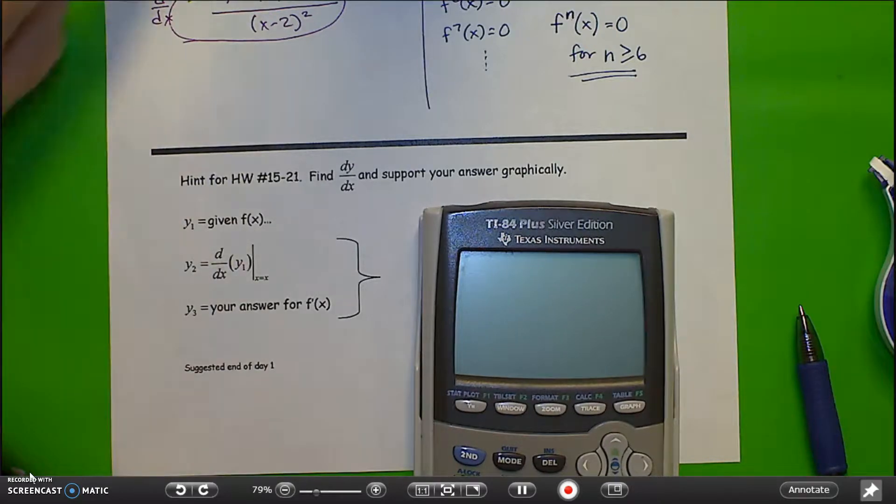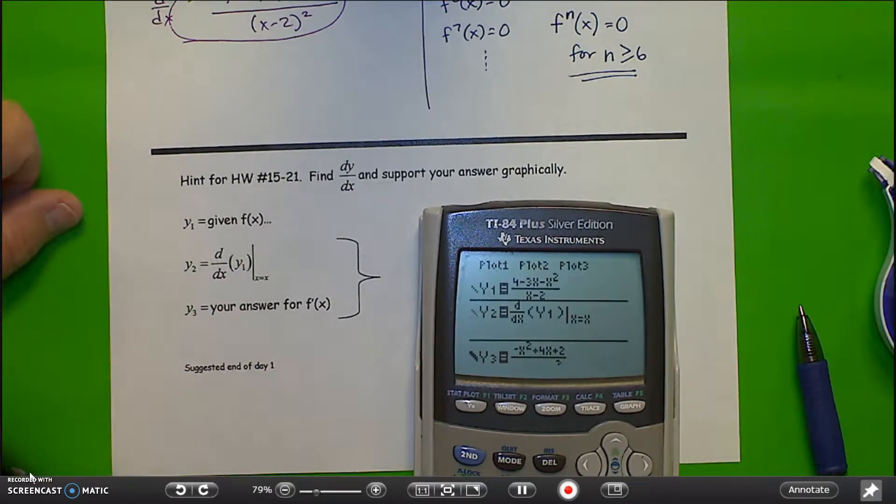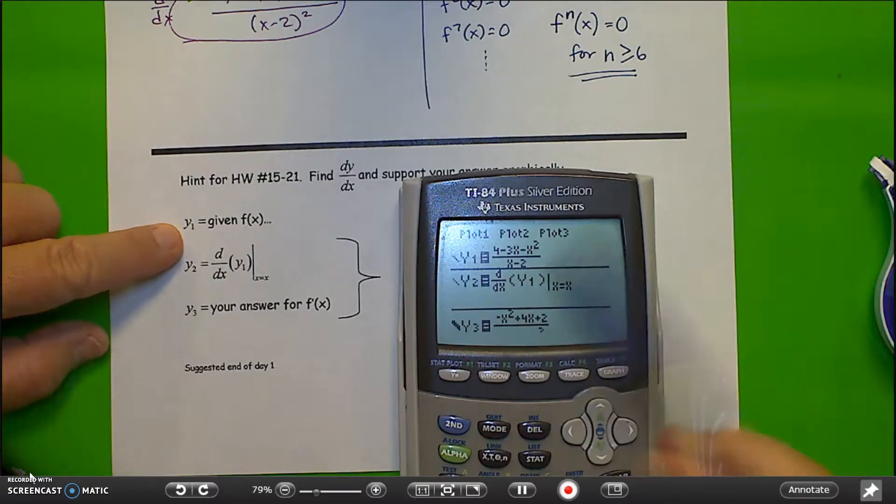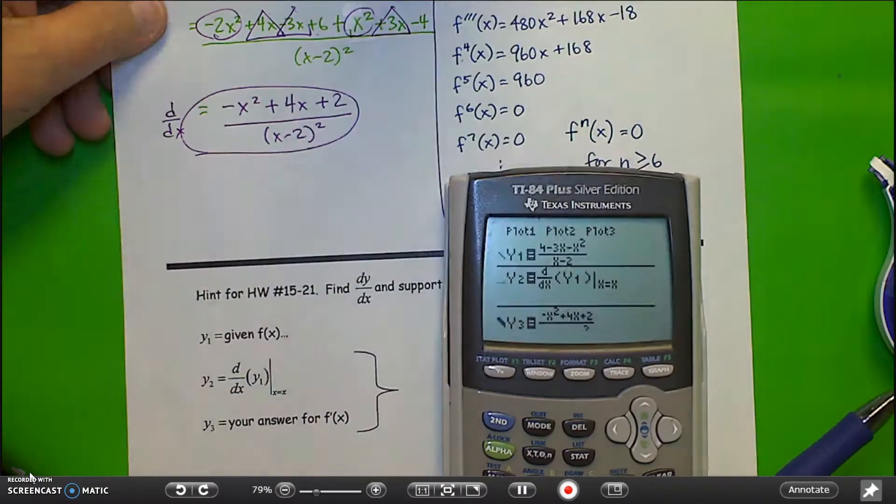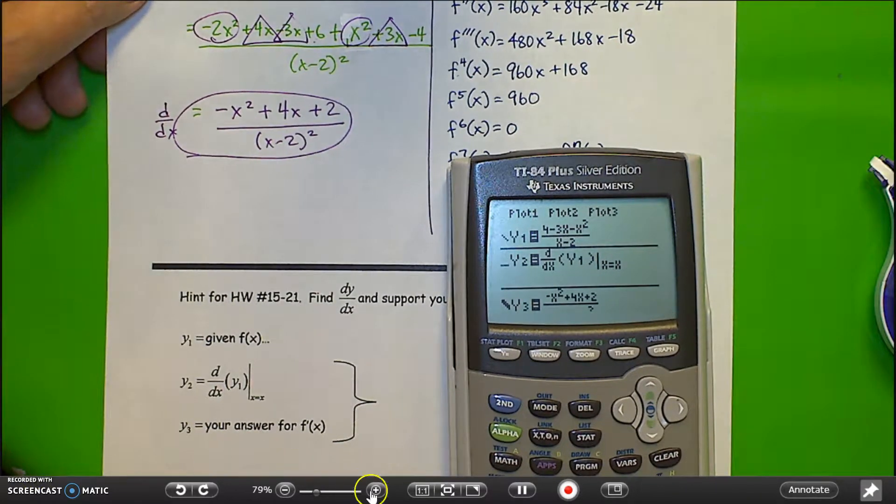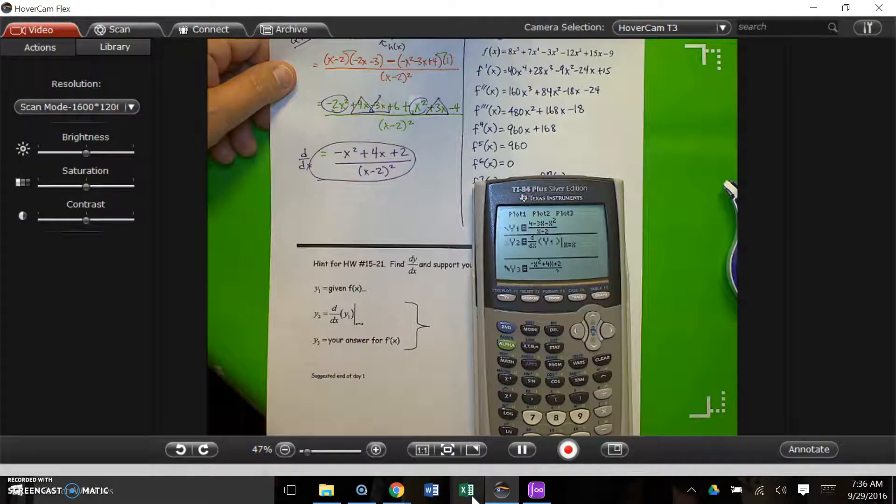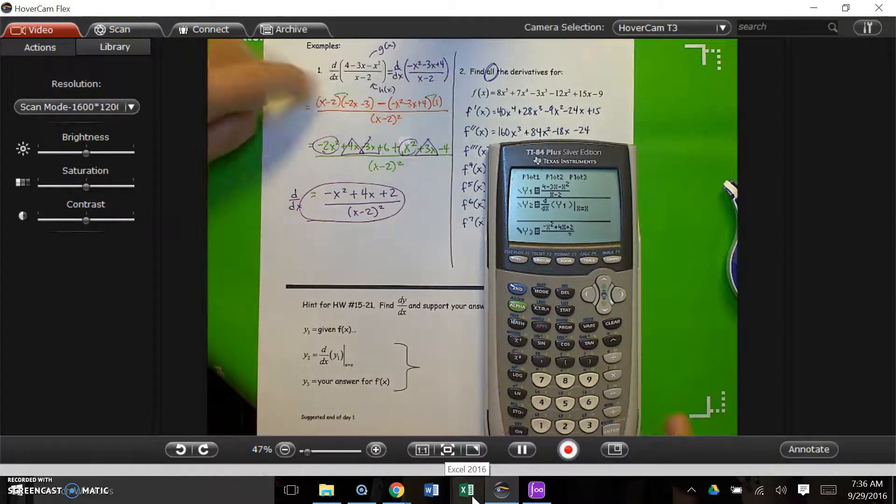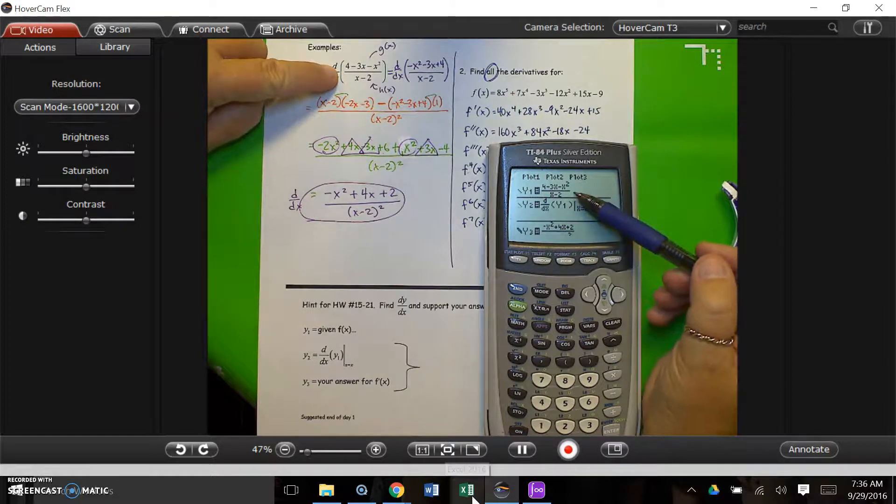So what you should do is, and I'm going to show you the quotient rule problem we did above. So in y1, put in your given function. So in our case, change the, so in our case, we have the original function here. So put that in y1.